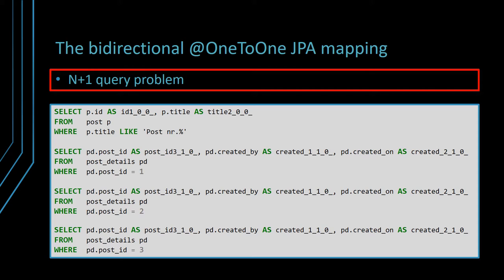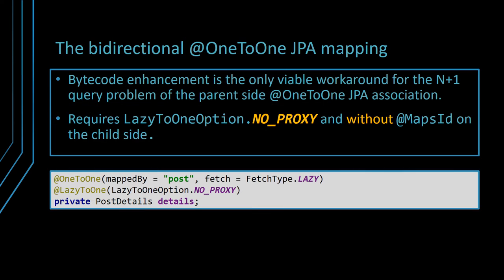Of course, you can fix the N+1 query issue with a join fetch JPQL directive, but what if you didn't want to retrieve the postDetails entities? Selecting more data than necessary is always a source of data access performance issues. You can also fix the N+1 query issue using entity class bytecode enhancement.